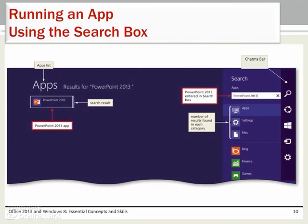If a tile is not present from the Start screen, swipe in from the right edge of the screen or point to the upper right corner of the screen to display the charms bar. Click the Search charm on the charms bar to display the search menu. Type the app name in the search box, then click the desired app name from the search results to run the app.